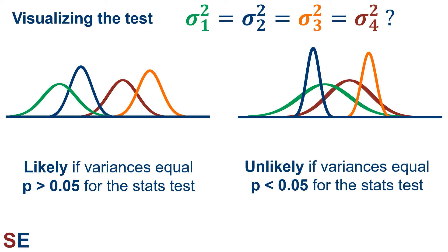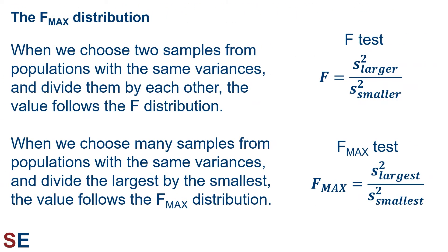On the other hand, if we took a sample from each population and got sample variances where some values seem much smaller or larger than one another, this is an unlikely result if the population variances are equal, and we should get a p-value less than 0.05. Now we just need a way to calculate a test statistic and get p-values. We'll develop this new test from our F-test for two populations. When we choose two samples from populations with the same variances and divide them by each other, the value follows the F-distribution — this is the basis of the F-test, which uses the test statistic shown. We compare this test statistic with the F-distribution to get the p-value.